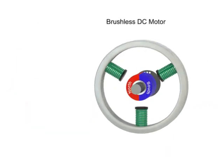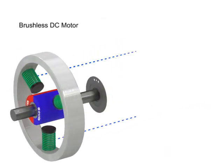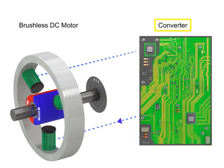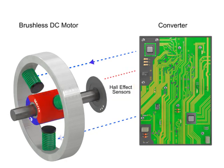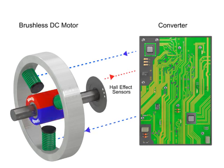A rotating magnetic field is formed by electrical pulses generated by a converter. As the rotor turns, a rotor position sensor provides feedback to the converter so the required stator field rotational sequence is maintained. The change in sensor state reports back to the converter, which continually switches the phase to the windings to keep the motor turning.